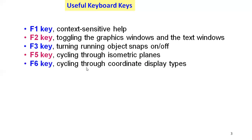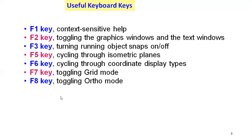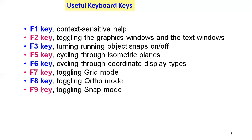F6 key cycles through the coordinate display types — various coordinates can be displayed with respect to the geometry. F7 key makes the grid on and off. F8 key makes lines perpendicular — ortho on and off. F9 key toggles snap mode on and off to make entity point-to-point snapping. F10 key toggles polar mode on and off.